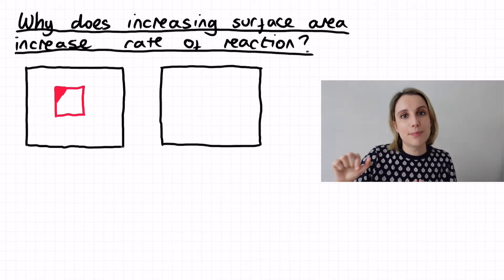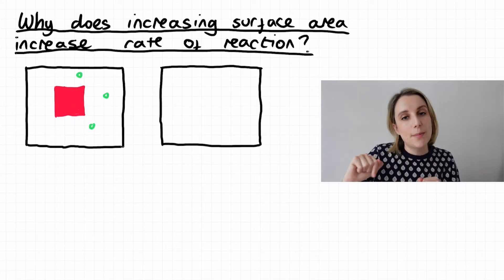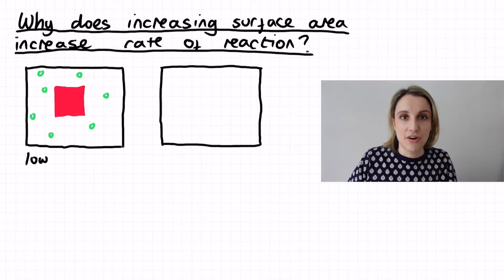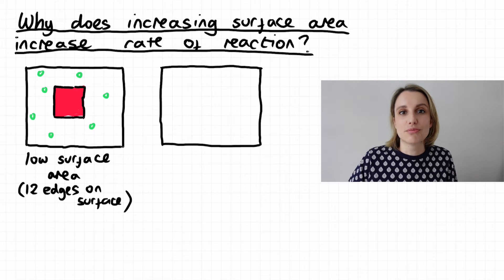So you can see my red block here as that big piece. If I count up how many sides there are on my diagram using the squares behind, in total you can see that I have five edges exposed ready for reaction.